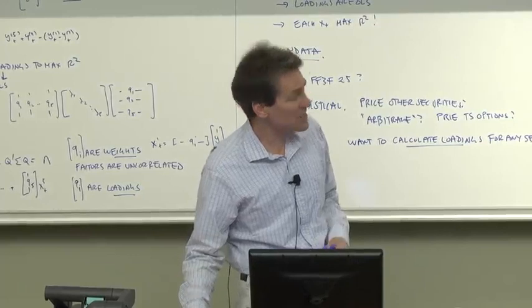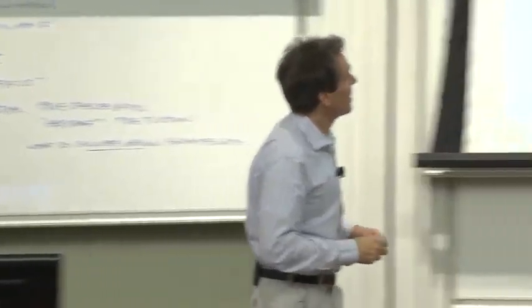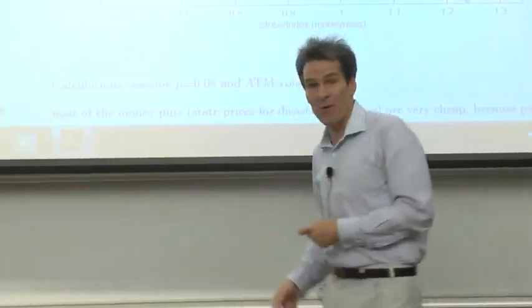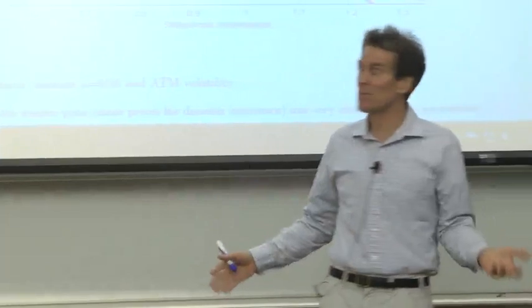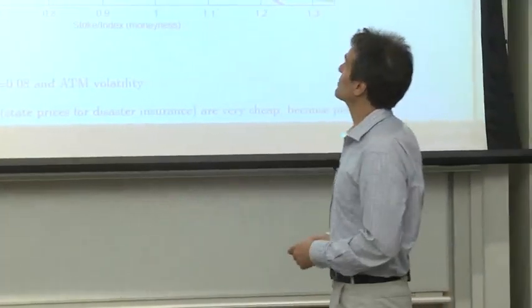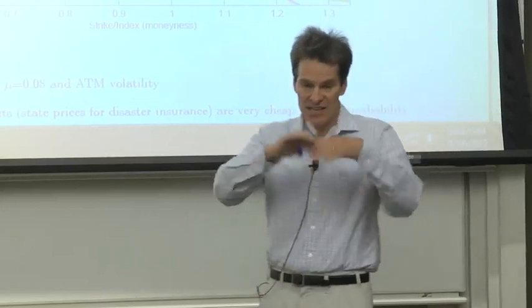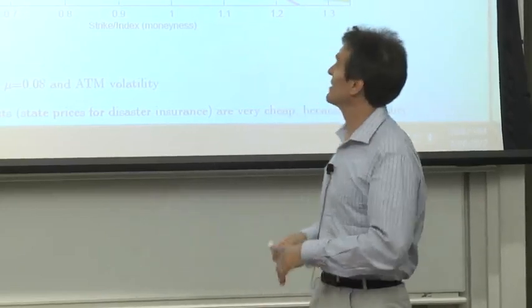Another way of putting the same observation, tying it into our last lecture, we showed last time that the second derivative of call price with respect to stock price gives you the contingent claims prices. So I took the second derivative of call price with respect to stock price, and that's the blue line here, and you can see it looks like a state price density ought to look.